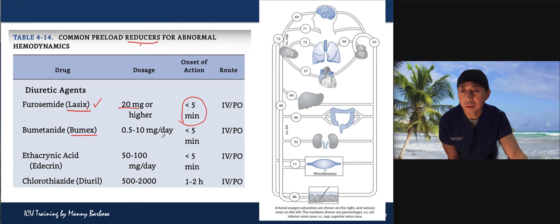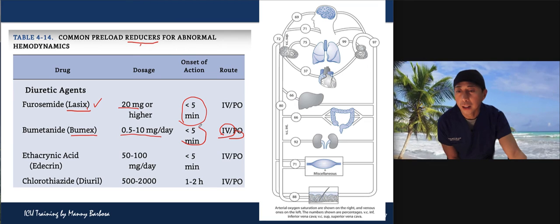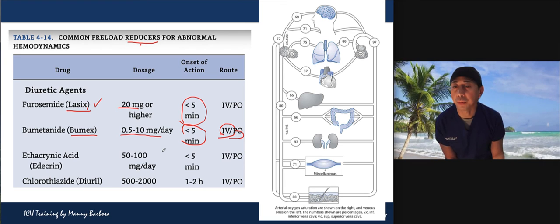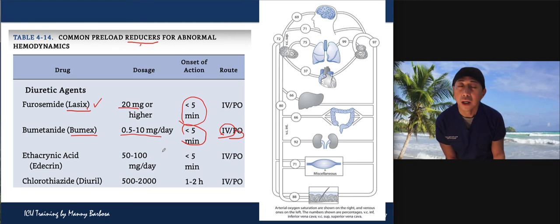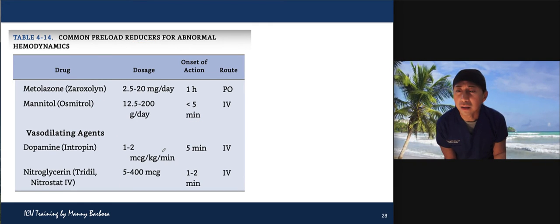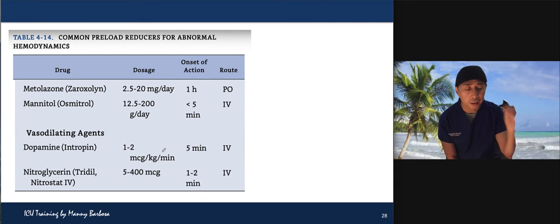If Lasix doesn't work, consider Bumex (bumetanide) 0.5–10 mg/day IV or PO, onset less than five minutes; Diuril (chlorothiazide) 500–2000 mg IV or PO, onset one to two hours; Edecrin (ethacrynic acid) 50–100 mg IV, onset less than five minutes. Lasix is highly effective with rapid onset. Zaroxolyn and mannitol are also available options.